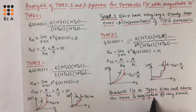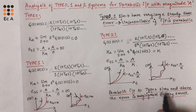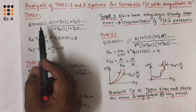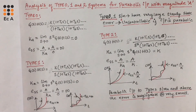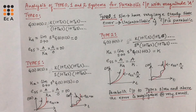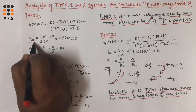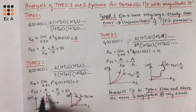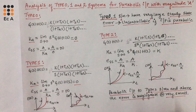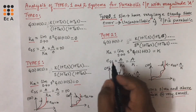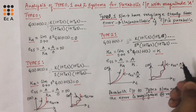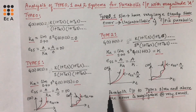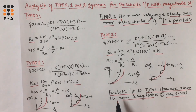We should not apply parabolic input to type 0 and type 1 systems because the error is infinity and cannot be controlled. For type 0 system, Ka is 0. For type 1 system, Ka is 0. For type 2 system, Ka is some constant K. This is about the analysis of type 0, type 1, and type 2 systems for parabolic input with magnitude A. Hope you have understood the topic. Thank you.